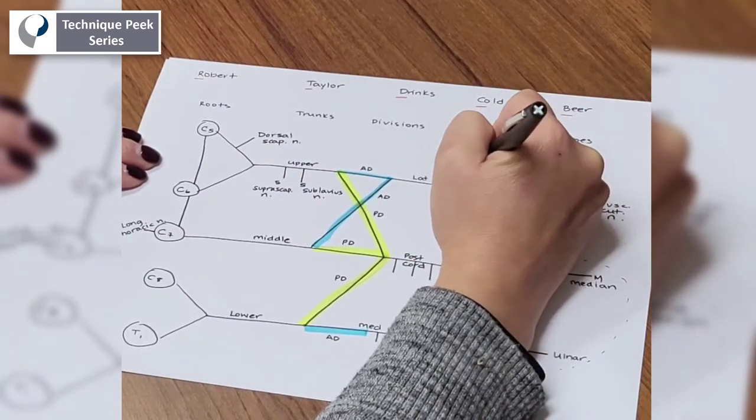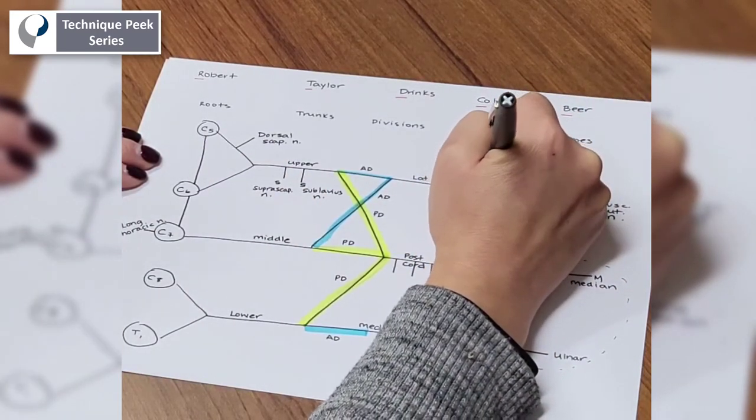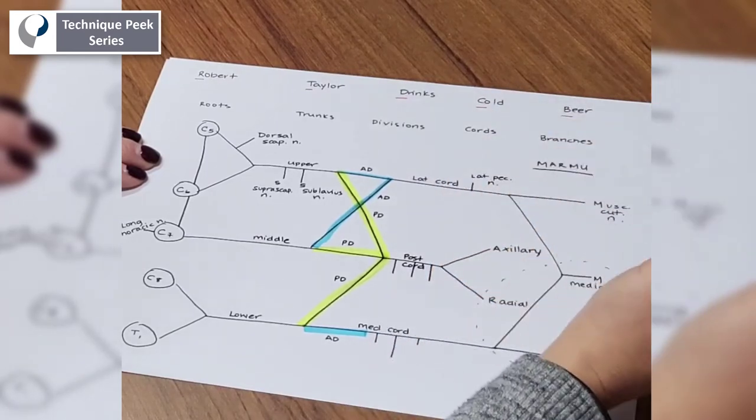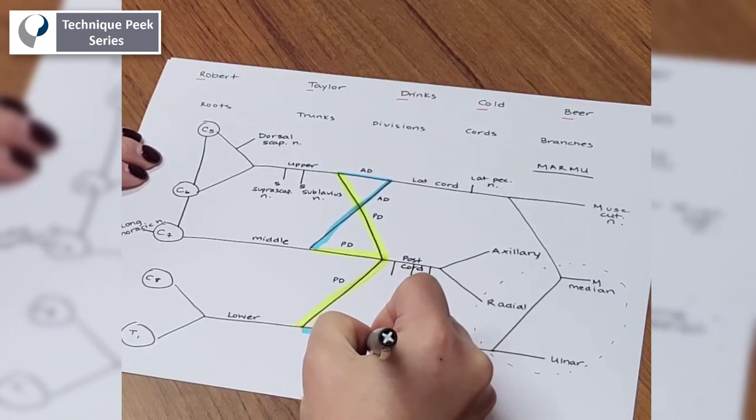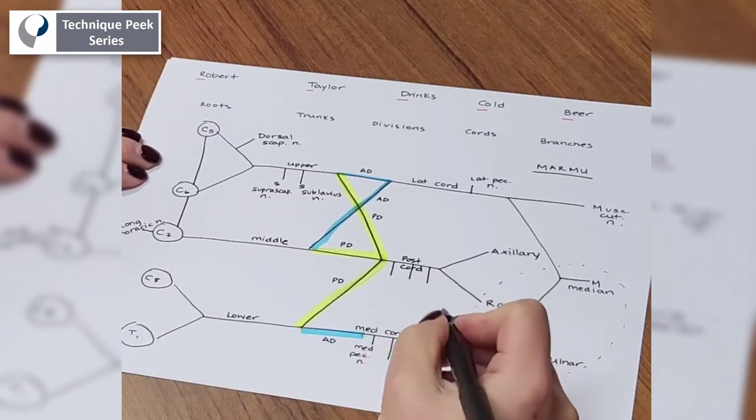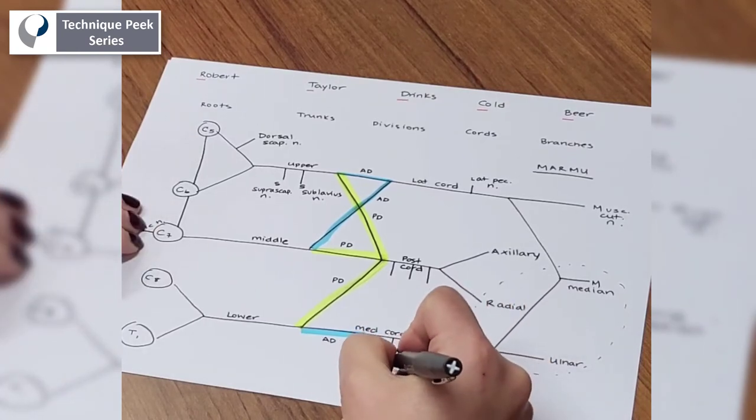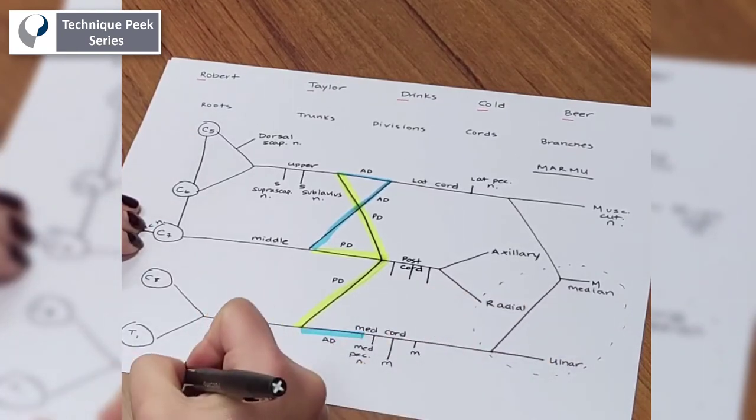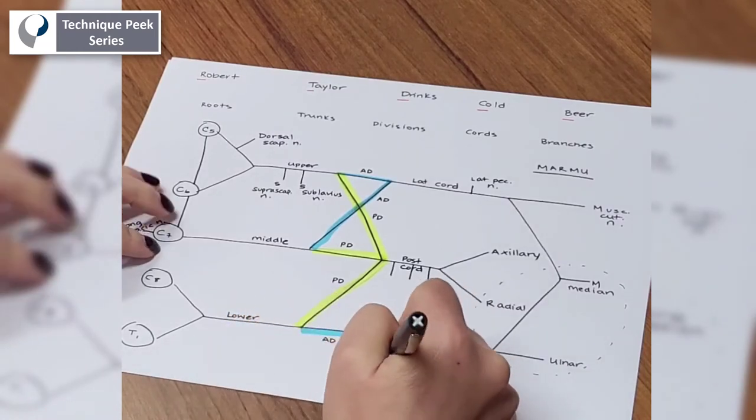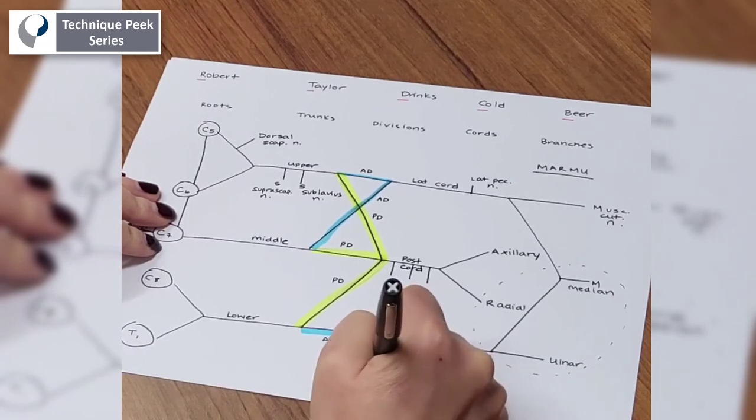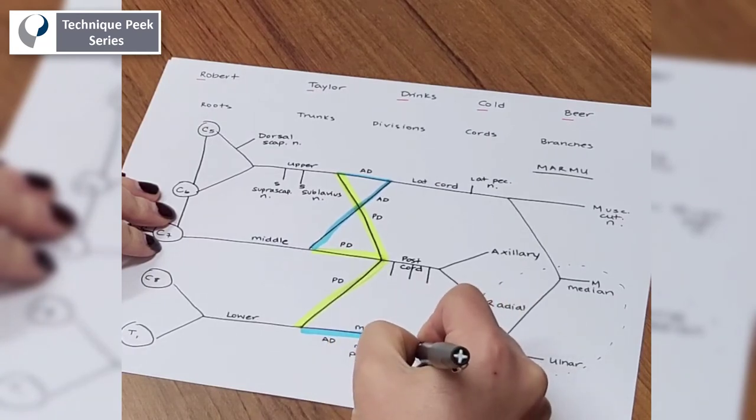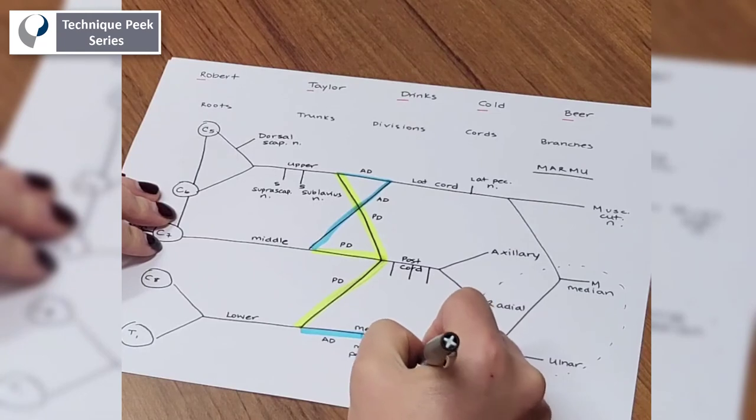Off of the lateral cord, we're going to see the lateral pectoral nerve. And then I like to go back down here because then we're going to also have a medial pectoral nerve. And while I'm down here, I might as well finish this medial cord. And I remember that there are two other M nerves here. One is the medial brachial cutaneous nerve. And this other one is the medial antebrachial cutaneous nerve.